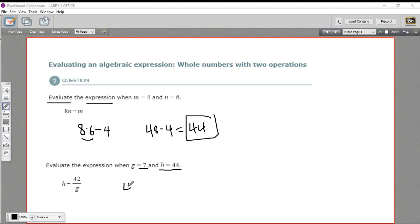Instead of that h, I'm going to put 44. And then there's a minus sign. And then we have 42 over, and instead of g, it should be 7. Okay. So we have 44 minus 42 over 7.